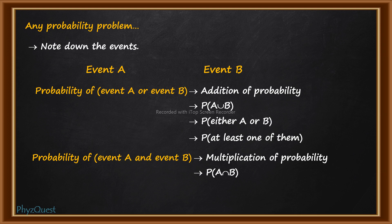Again, this can be mentioned in different ways. It can be written as 'probability of A and B,' or also as 'probability of both of them.' When you come across such phrases, you are sure that here you have to multiply the probability.